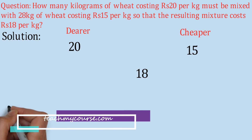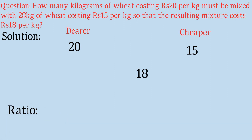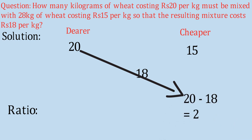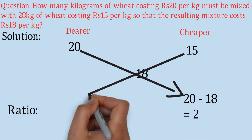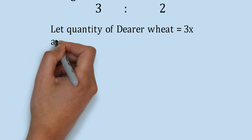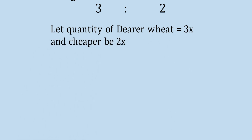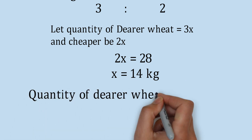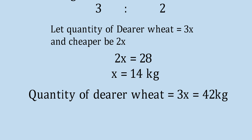We need to find the ratio of quantities in which they are mixed. Cheaper quantity ratio = 20 − 18 = 2, and dearer quantity ratio = 18 − 15 = 3. So the ratio of dearer to cheaper is 3:2. Let dearer wheat = 3x and cheaper wheat = 2x. We know the cheaper quantity is 28 kg, so 2x = 28, giving x = 14 kg. Therefore the quantity of dearer wheat = 3x = 42 kg.